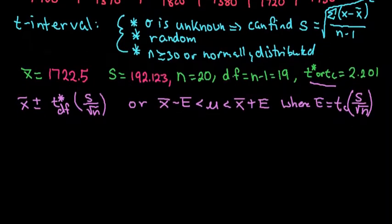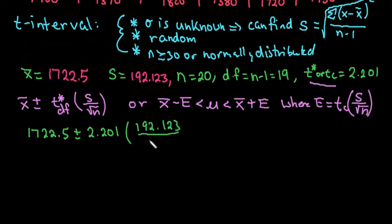Now if we plug it into our formula - this is just the shorthand, I'm just going to use this - we would do 1722.5 plus or minus, then plug in our 2.201 times our standard deviation, which is 192.123, divided by square root of 20. That gives us our confidence intervals - our lower bound was 1600.43 and our upper bound was 1844.57.